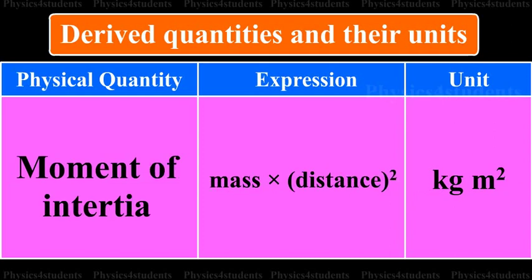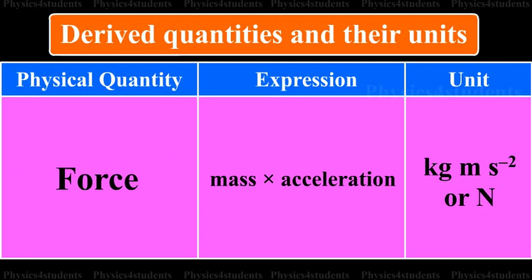Physical quantity is moment of inertia. Its expression is mass into distance square. Its unit is kg m square. Physical quantity is force. Its expression is mass into acceleration. Its unit is kg m s raised to minus 2, or N.